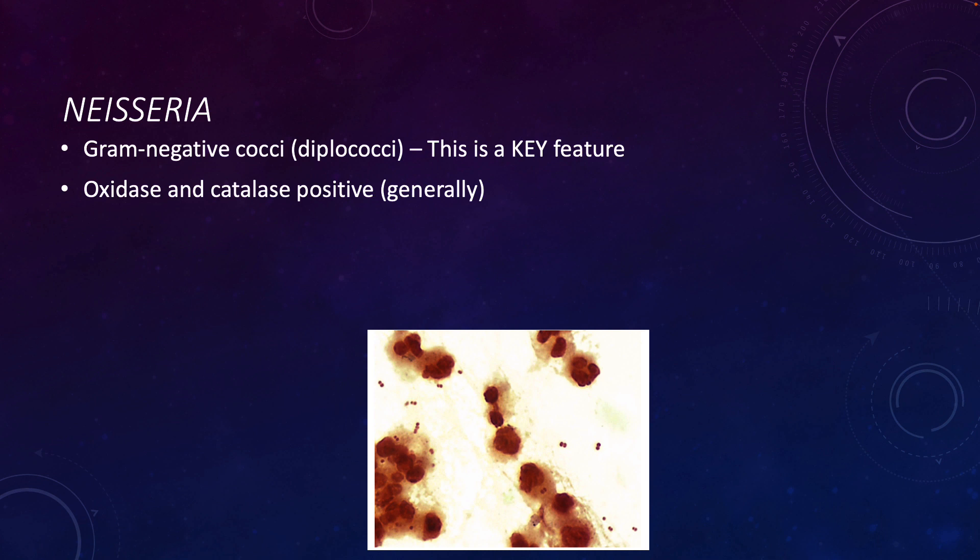These species belonging to this genus are generally oxidase positive and catalase positive. Oxidase is a really easy biochemical test — it literally takes about 30 seconds to a minute. You are looking for the presence of cytochrome C. And of course, we've already talked about catalase a number of different times.